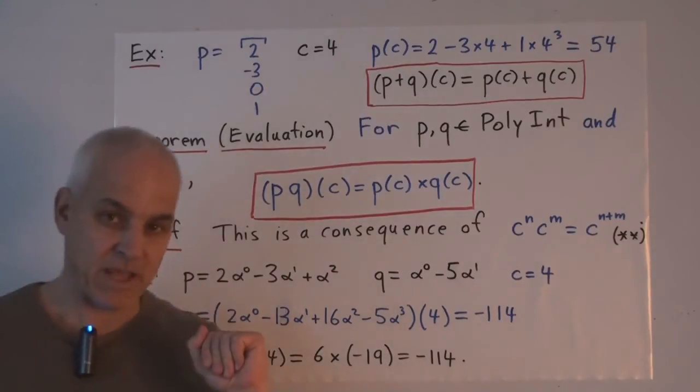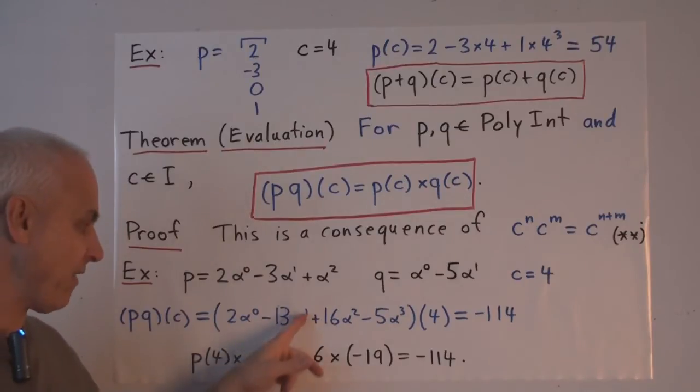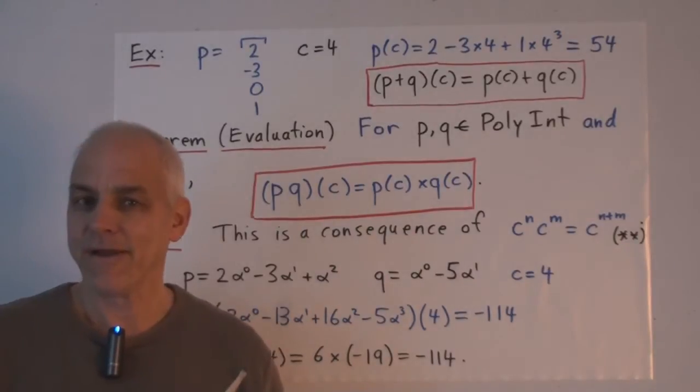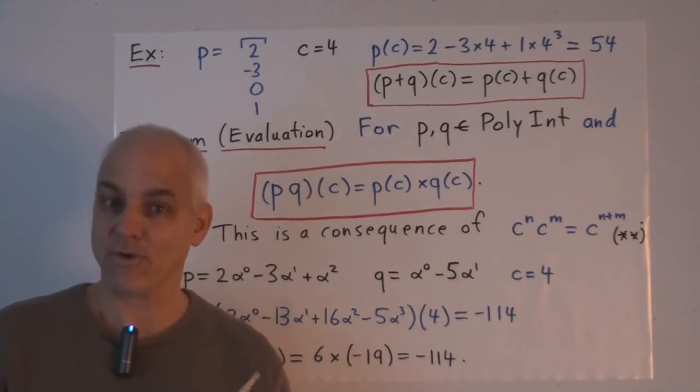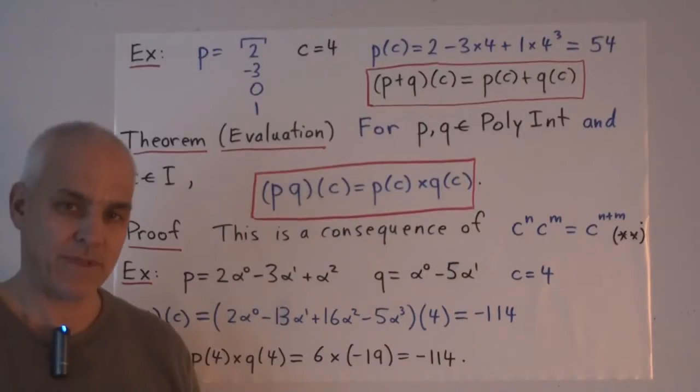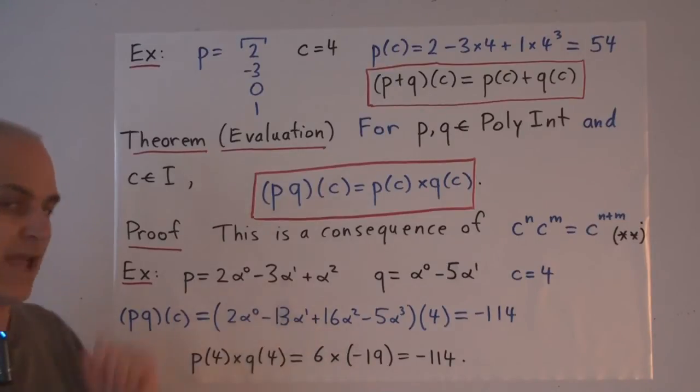Now at some point it's going to become annoying for us to always have to write alpha to the zero plus alpha to the one and so on. And so I'm going to take the liberty now of dropping that rather rigid requirement. If we are forced to justify ourselves formally, then we'll go back to this definition. But in practice, we'll just forget the alpha to the zero and write two. And we'll forget the alpha to the one and just write alpha.